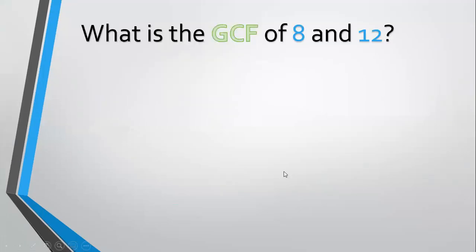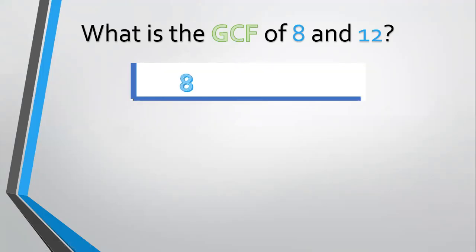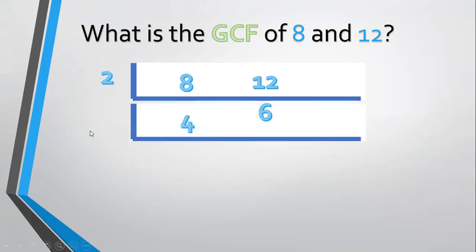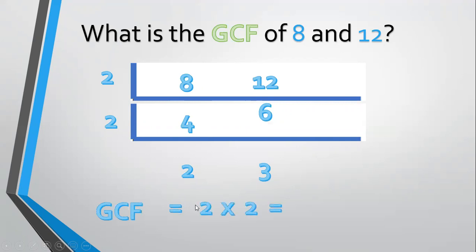Another example, what is the GCF of 8 and 12? Align 8 and 12. Divide by a prime common factor, 2. 8 divided by 2 equals 4. 12 divided by 2 equals 6. Divide again by 2. 4 divided by 2 equals 2. 6 divided by 2 equals 3. 2 and 3 have no prime common factor, so let's stop. Then get the GCF: 2 times 2 equals 4. The GCF equals 4.